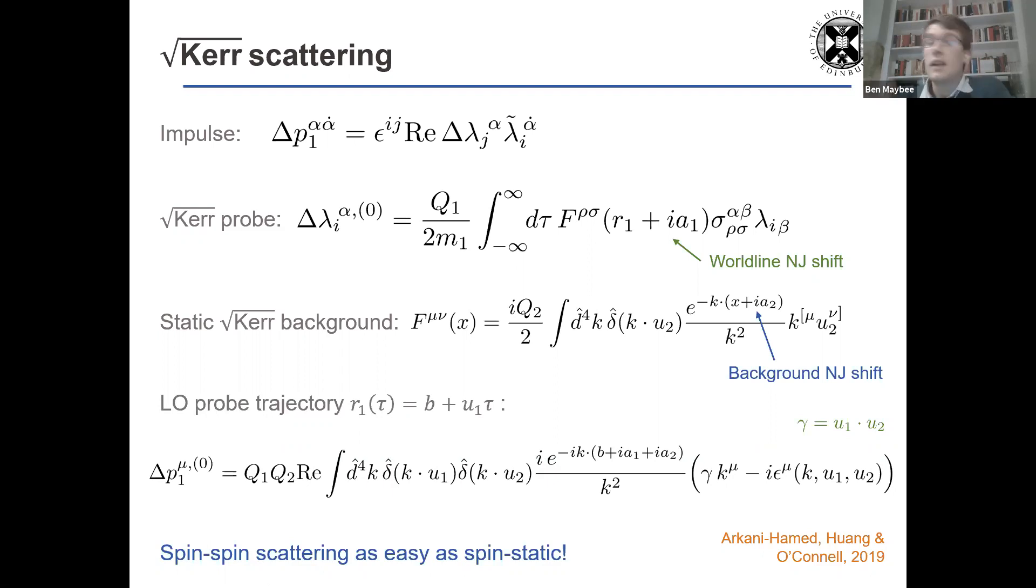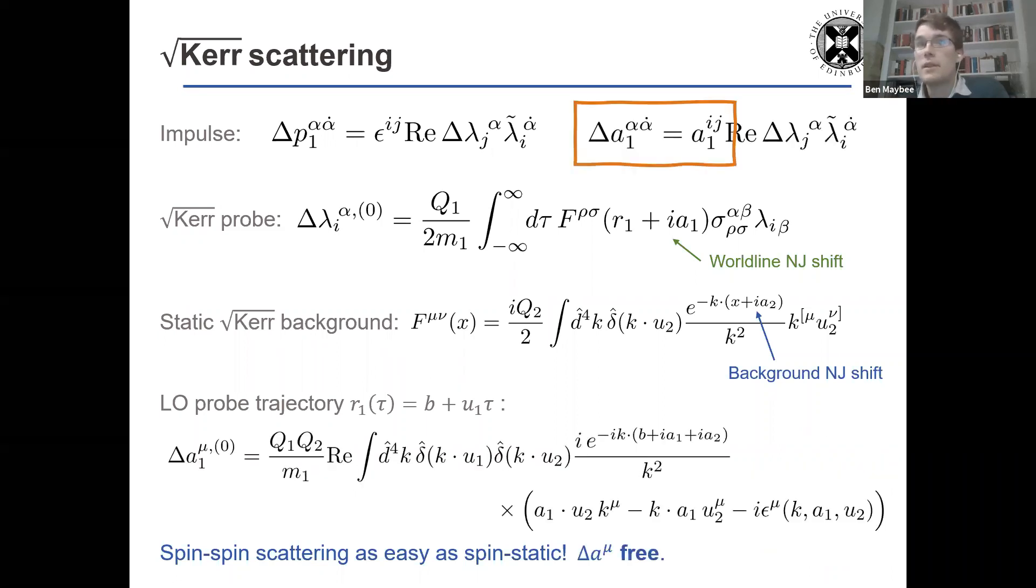And the spin scattering, like the amplitudes, is just as easy as doing spin static, this classical equations of motion. The other thing that's really nice about using the spinors rather than amplitudes is it's also super easy to do the angular impulse, so changing the spin vector. All we have to do is change the initial little group spinor, putting together those little group indices.